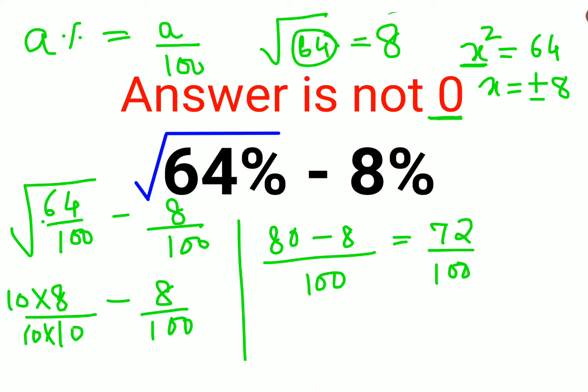So if they wanted the answer as a fraction, you can reduce this further. That gets you 36 upon 50, which can further reduce to 18 upon 25. So this is your first answer: 18 upon 25.